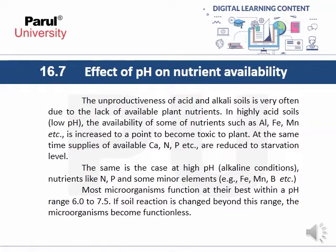Under alkaline conditions, nutrients like nitrogen, phosphorus, and some micronutrients such as iron, manganese, and boron become less available. Most microorganisms function best within a pH range of 6.0 to 7.5. If soil reaction changes beyond this range, microorganisms become less functional.